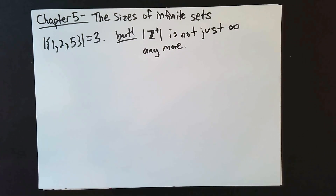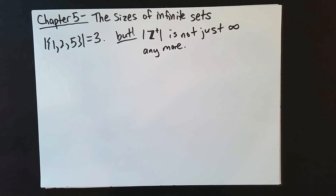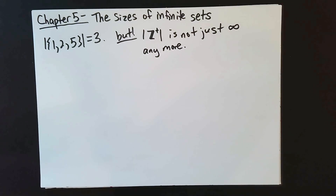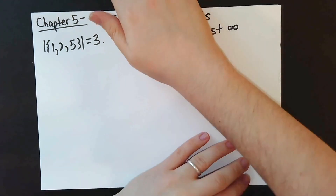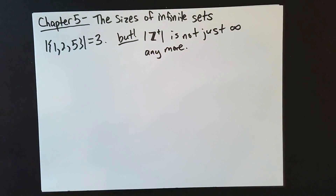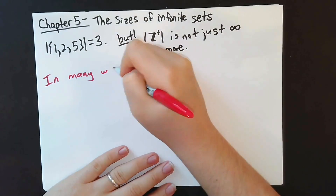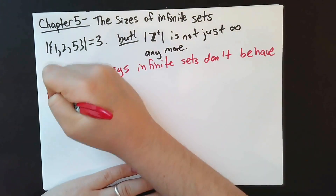I should note this area of mathematics was not developed until the 1800s, because it required a rather careful understanding of the topics we've been discussing — things about functions being one-to-one, bijections, and so on are all going to figure rather intimately into our discussion of infinite sets. And I want to reiterate something important: in many ways, infinite sets do not behave like finite sets. This is unavoidable, and it will frequently lead you to make statements that, though intuitive, are ultimately not true.